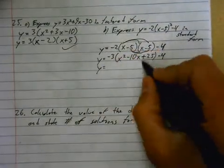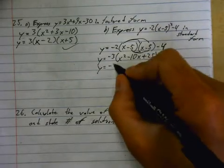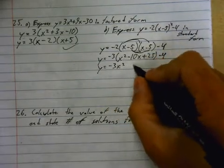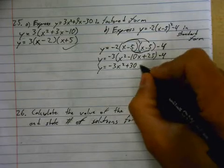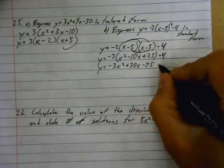Okay, next, once I've got my trinomial, I'm going to multiply the negative 3 in there, so negative 3x squared plus 30x minus 75, and then minus 4.